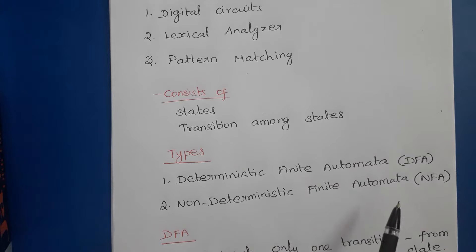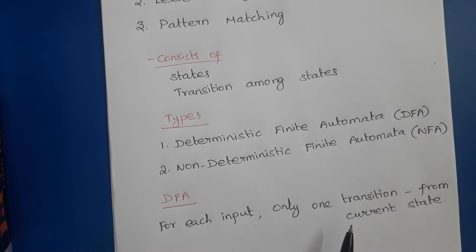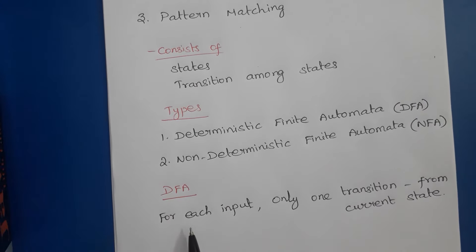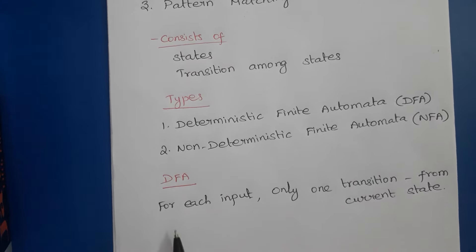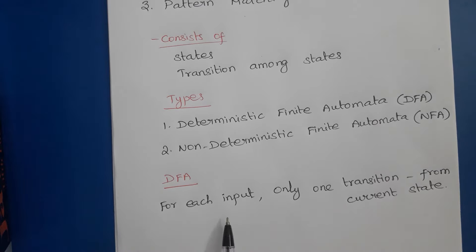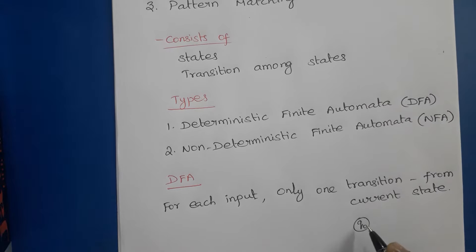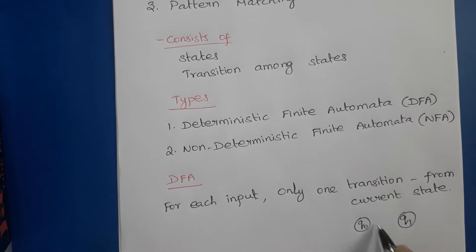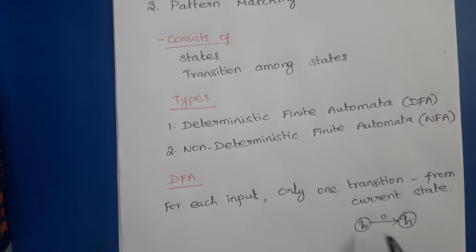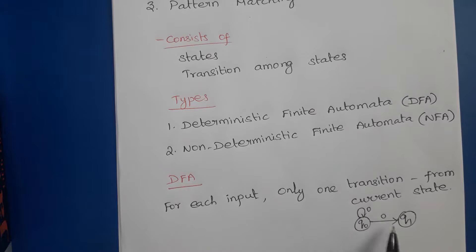There are two types of finite automata: Deterministic Finite Automata (DFA) and Non-Deterministic Finite Automata (NFA). In this video we are going to discuss about DFA. DFA means for each input only one transition is possible from the current state. For example, from state q0 with input symbol zero, it may go to q1 or q0, but both transitions at the same time are not possible.